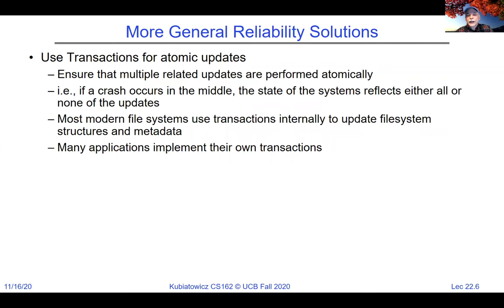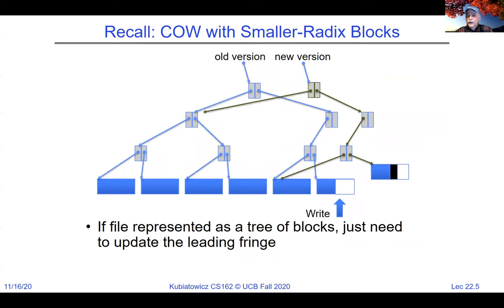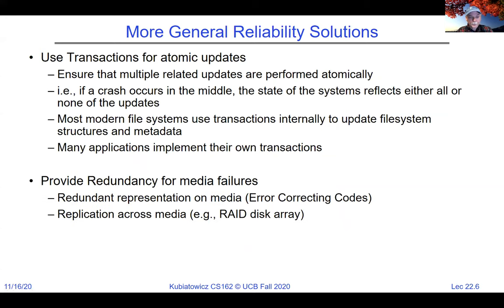A more general idea is to use a transaction, which you've probably heard about in database classes. When you go to update a file, you use transactions to provide atomic updates to the file system such that there's a single commit point at which the new version of the file system is ready to go. Until you reach that commit point, any of the things you do to the file system can be undone. The transactional ideas are a little bit more general — we use transactions to give us clean commits to the integrity of the file system, and then we use redundancy to protect the bits.